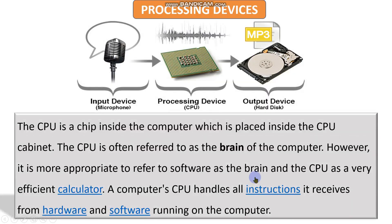Next, we have processing devices. When we say processing device, the picture of a CPU comes to mind. But actually, the CPU is this small chip — not the whole box, which is just the casing. Inside that casing, we have this little chip that is called the brain of the computer. CPU is a chip inside the computer placed inside the CPU cabinet and is often referred to as the brain of a computer.